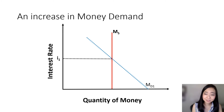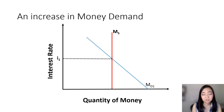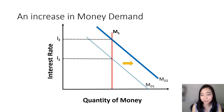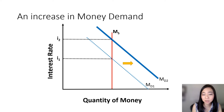What happens if there is an increase in money demand? Then we shift our money demand curve to the right. As a result, we are going to see a higher equilibrium interest rate.